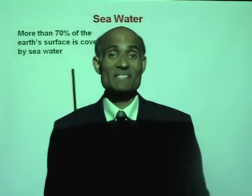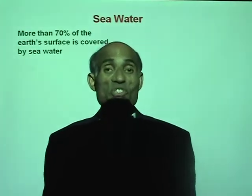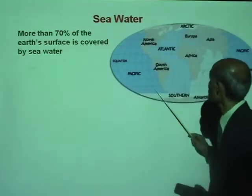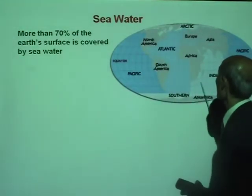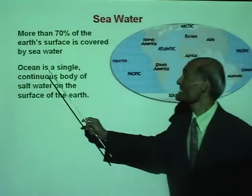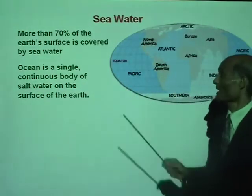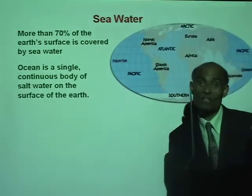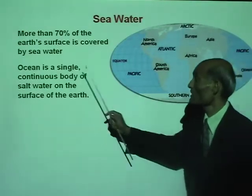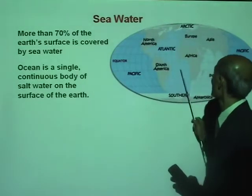We know that 70% of the Earth's surface is covered with sea water. If you look at this picture, it is very obvious two-thirds of the Earth's surface is covered with water. The ocean is a single continuous body of water on the surface of the Earth.